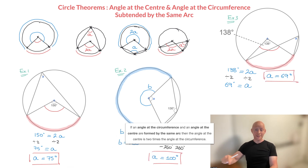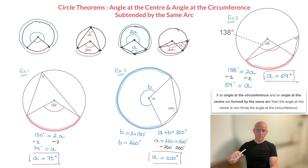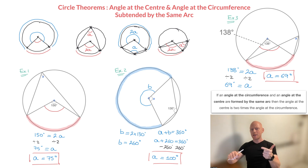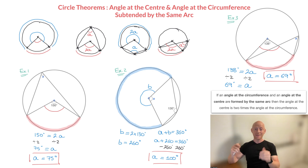That's it for this circle theorem. Remember, if an angle at the circumference and an angle at the center are subtended by the same arc, then the angle at the center will be 2 times bigger than the angle at the circumference. That's it for this tutorial.